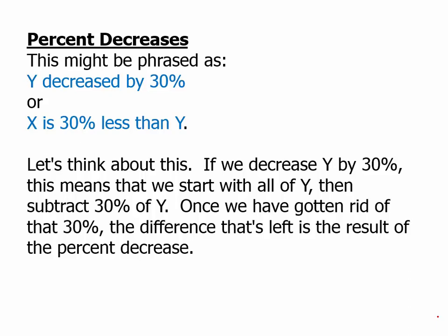Let's think about this. If we decrease Y by 30%, that means we start with all of Y and we subtract 30% of it. Once we've gotten rid of that 30%, the difference that's left is the result of the percent decrease.